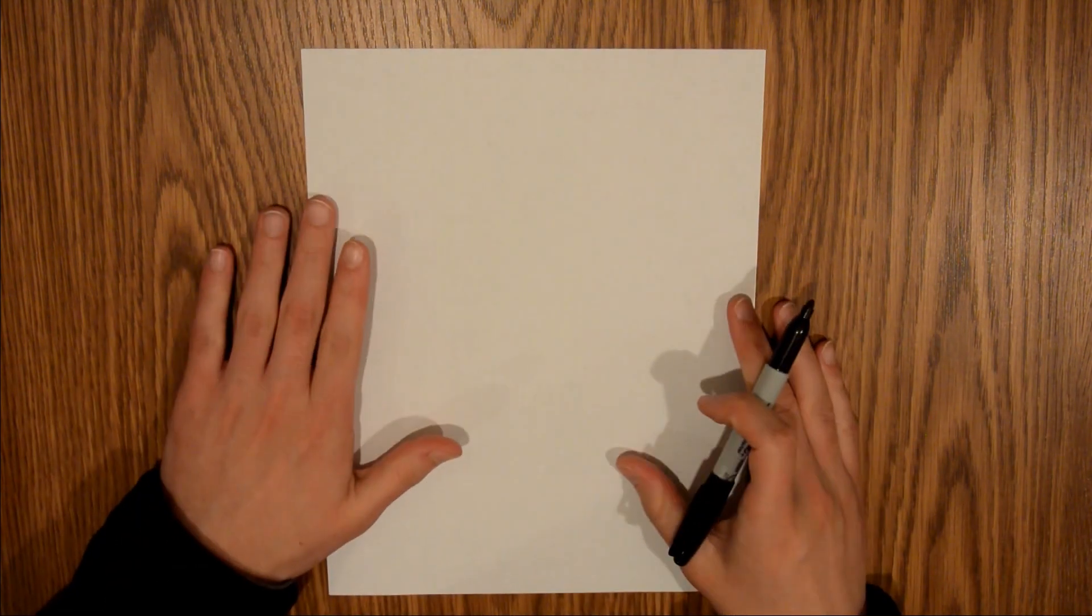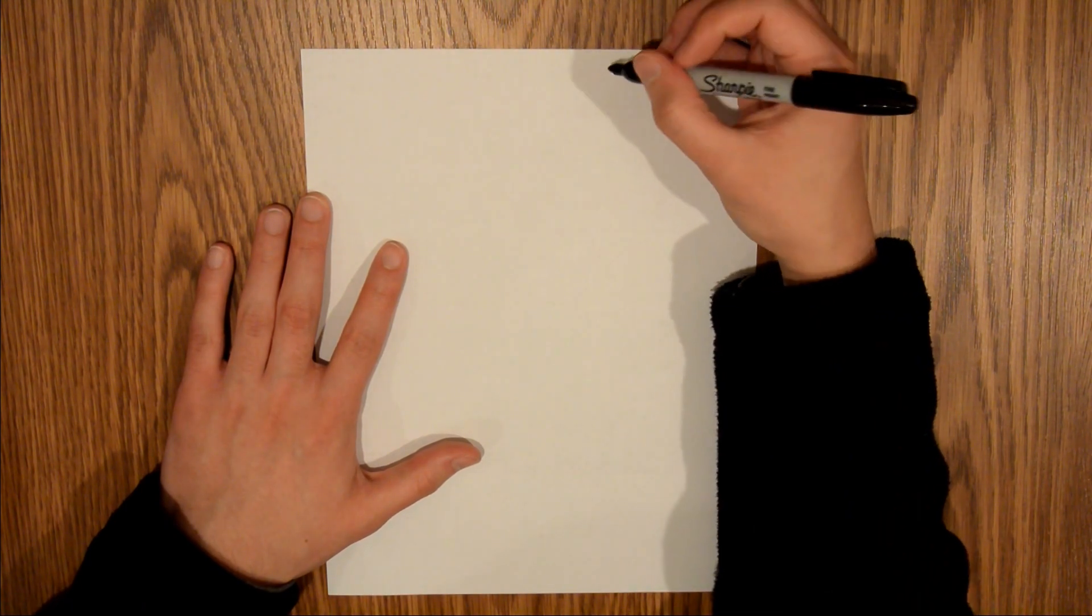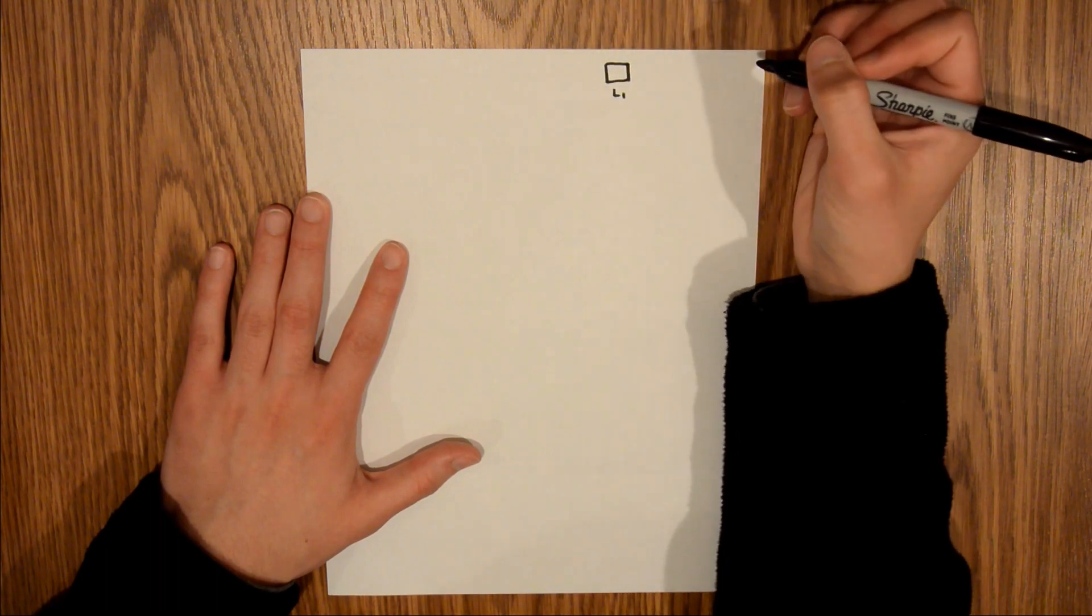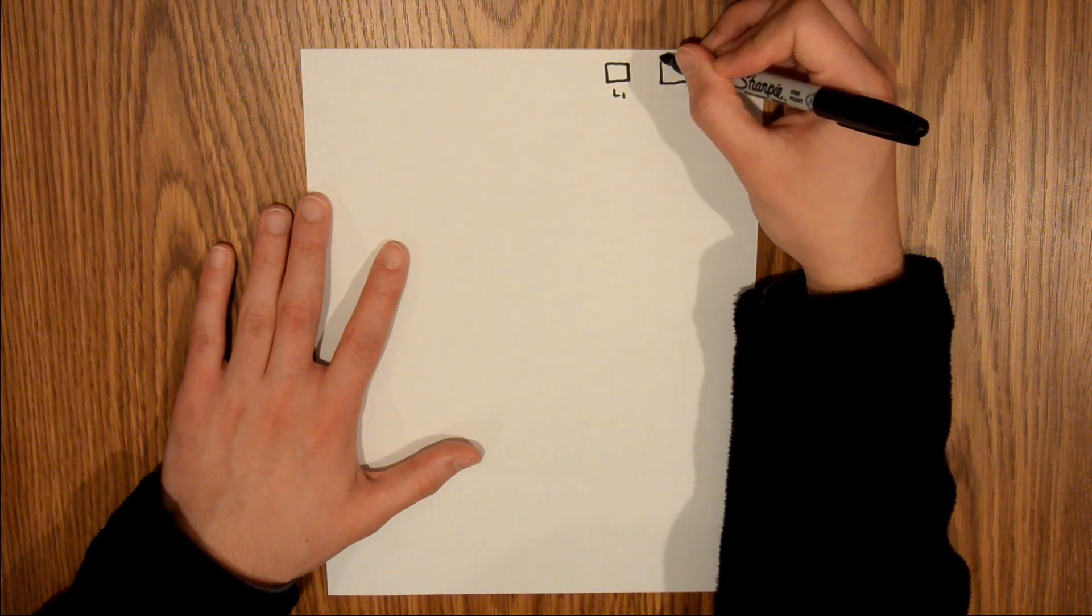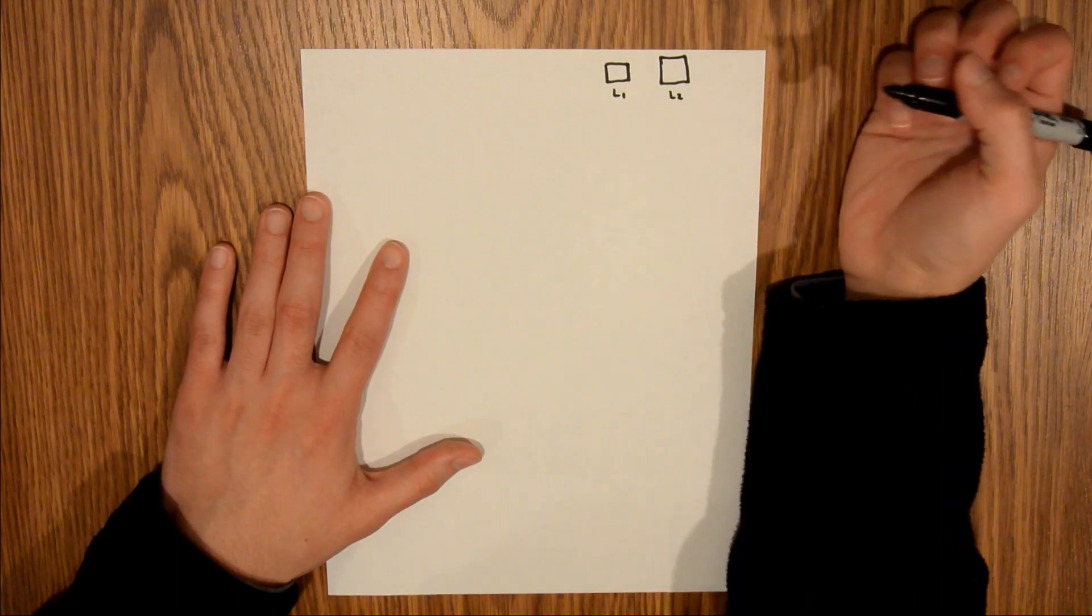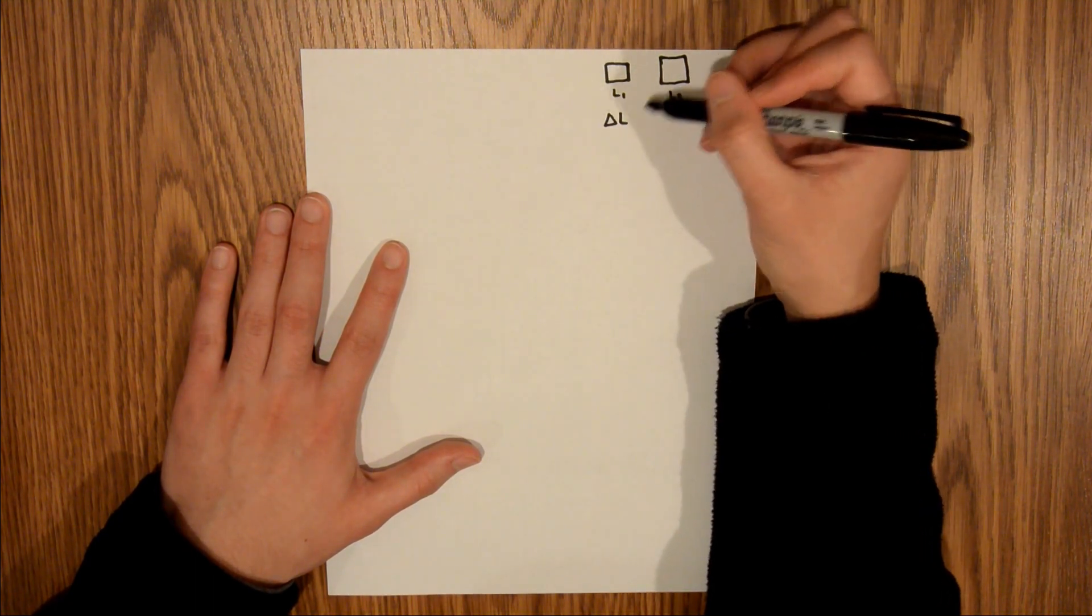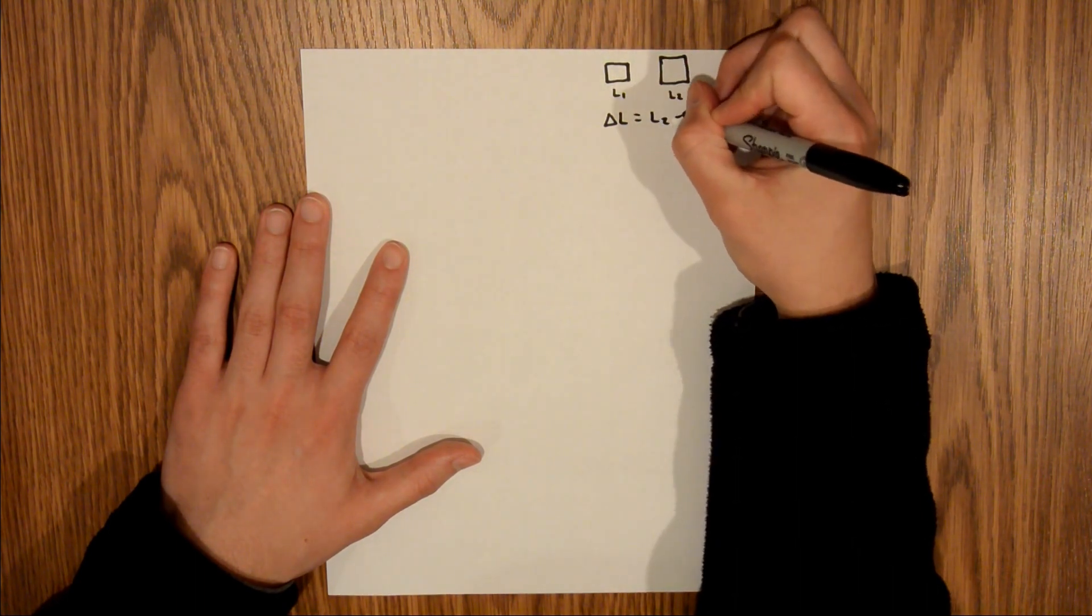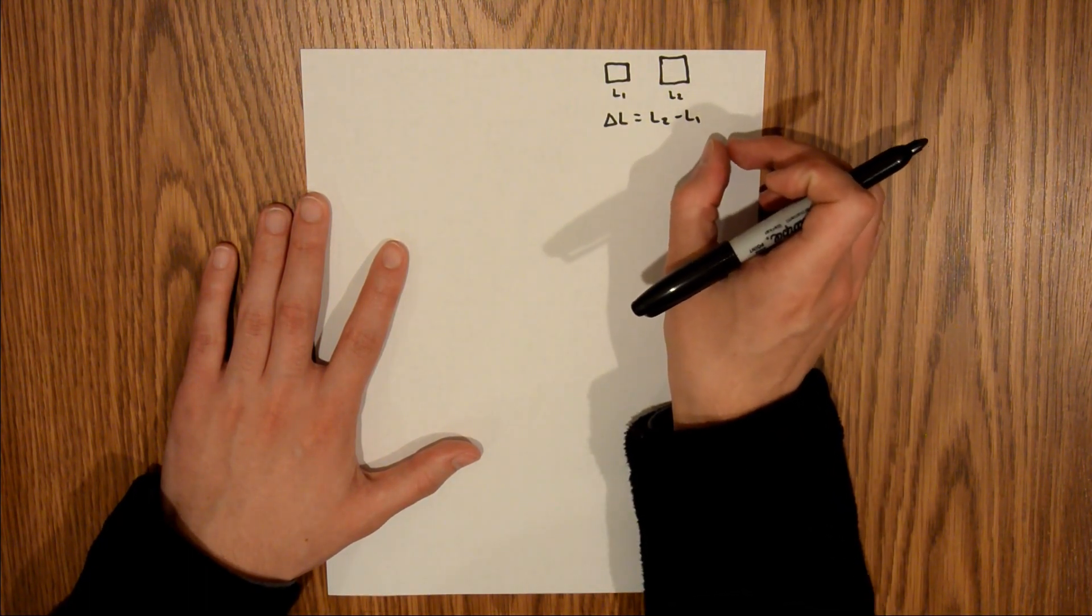The first thing that I'm going to do is draw a picture. Our cube, which I'm going to draw from just one face so it looks like a square, has a side length of L1. And then after it's heated, it's going to expand a little bit. After the expansion, we'll call the side length L2. I'm going to define a new variable, delta L, which is the change in the side length between the heated and the original. That's going to be equal to L2 minus L1, essentially the amount the length increases by expansion.